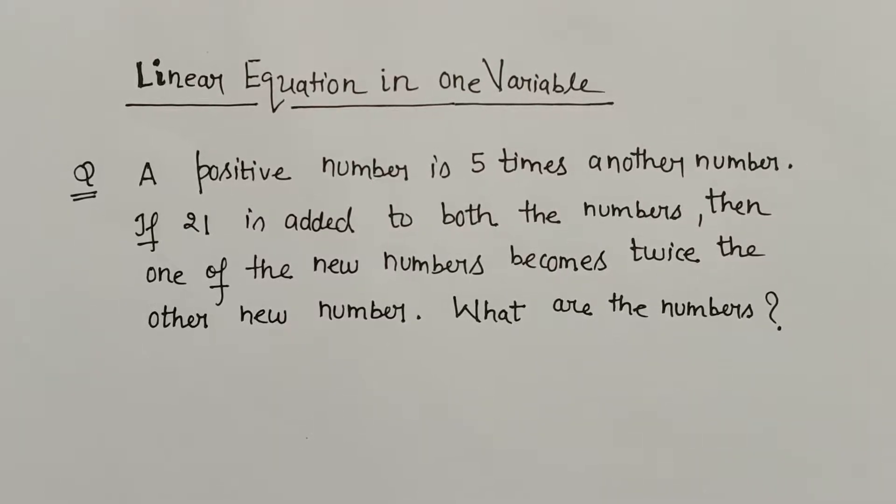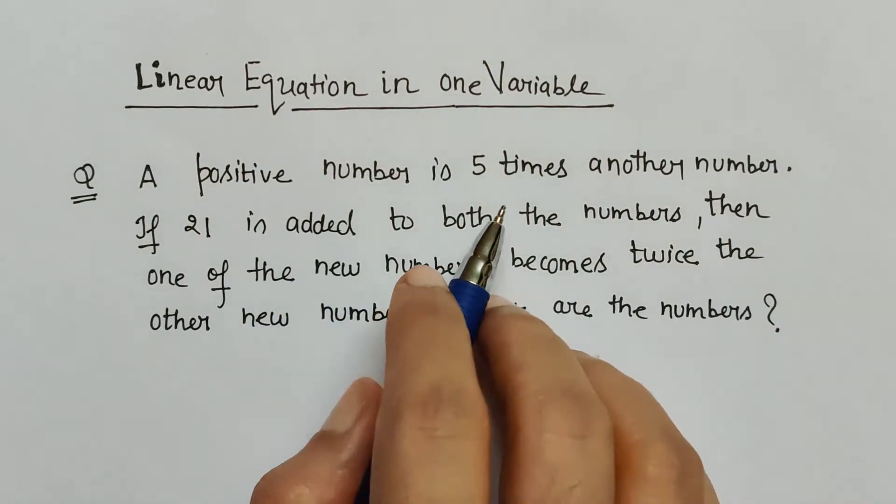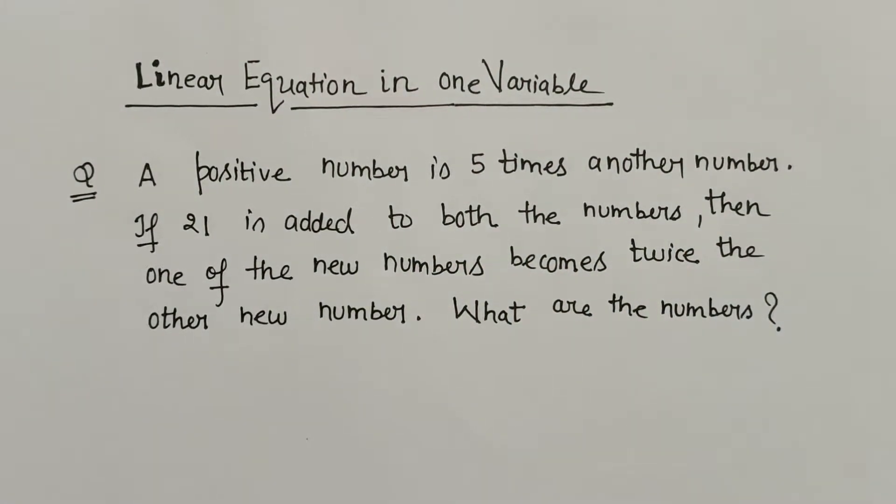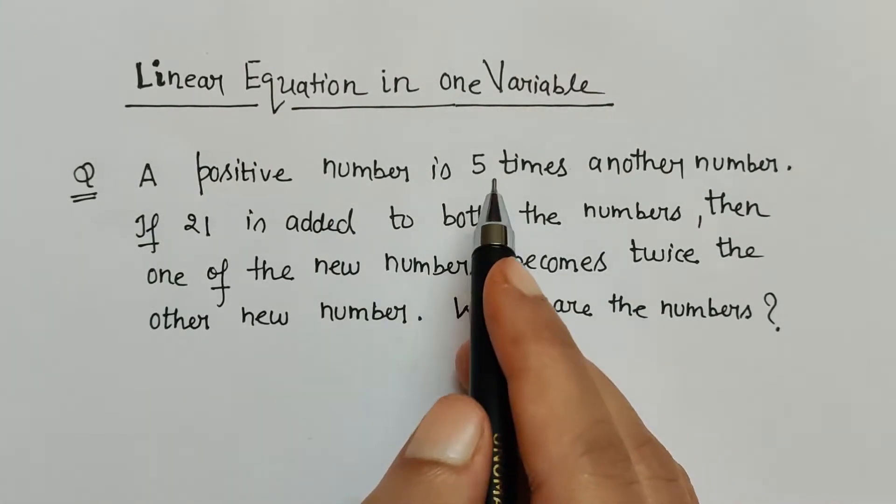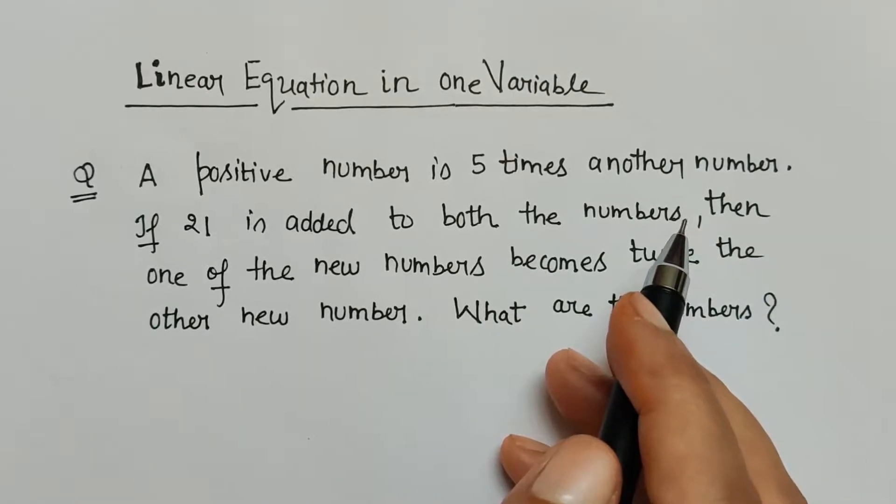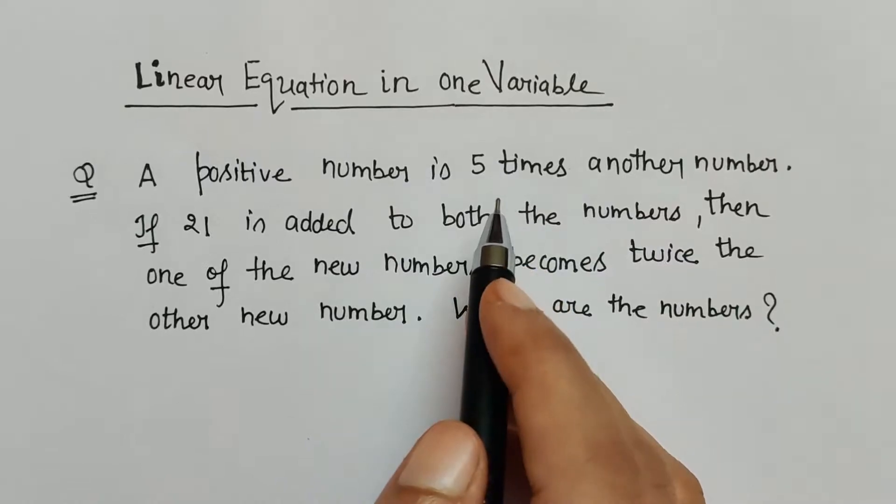Hello friends, in this video I'm going to explain this word problem which states that a positive number is five times another number. What does it mean? It says that there is a number which is five times more than the other number. That means there are two types of numbers: one is less in value and the other is more in value.